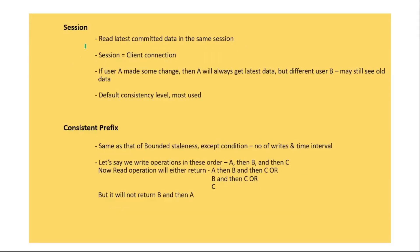Session consistency means you read the latest committed data within the same session, where one session equals one client connection. For example, if user A makes some changes and then reads data from the secondary region, they will always get the latest data. But if a different user B reads from the secondary region, they may still see old data. Data is consistent only within the specific session from which the write was made. Session is the default consistency level and the most commonly used.